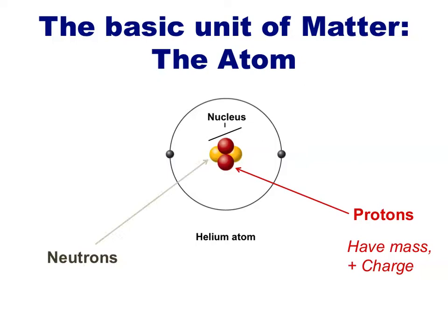It shares this space with neutrons, depicted here as yellow spheres. Neutrons also have a mass, in fact, about the same mass as a proton does, but they do not have an electric charge.